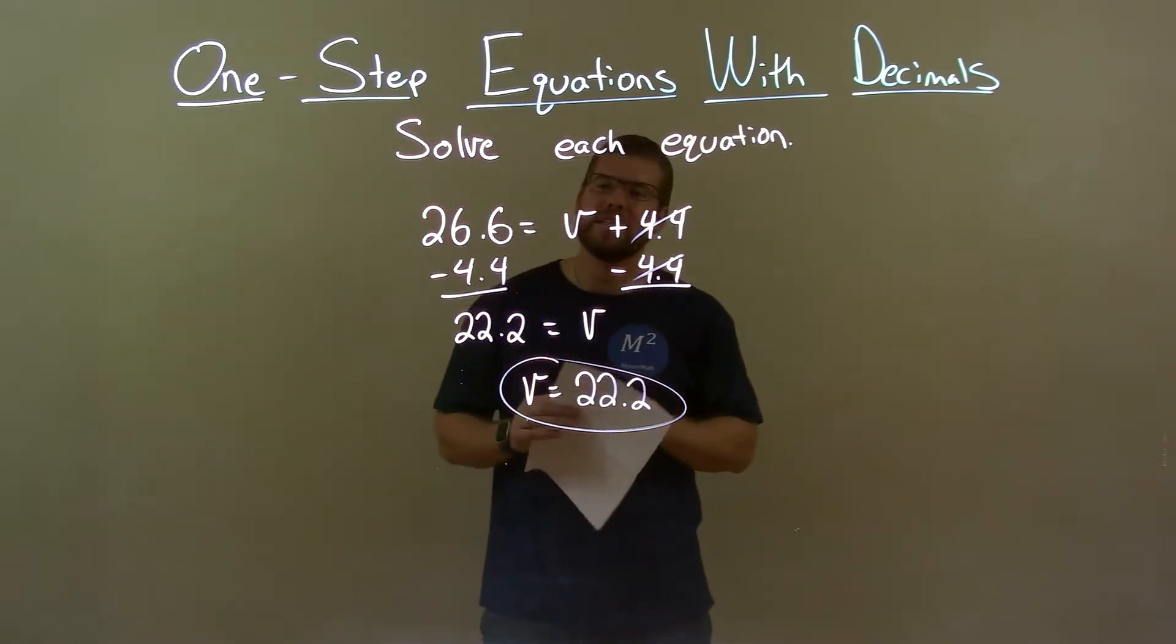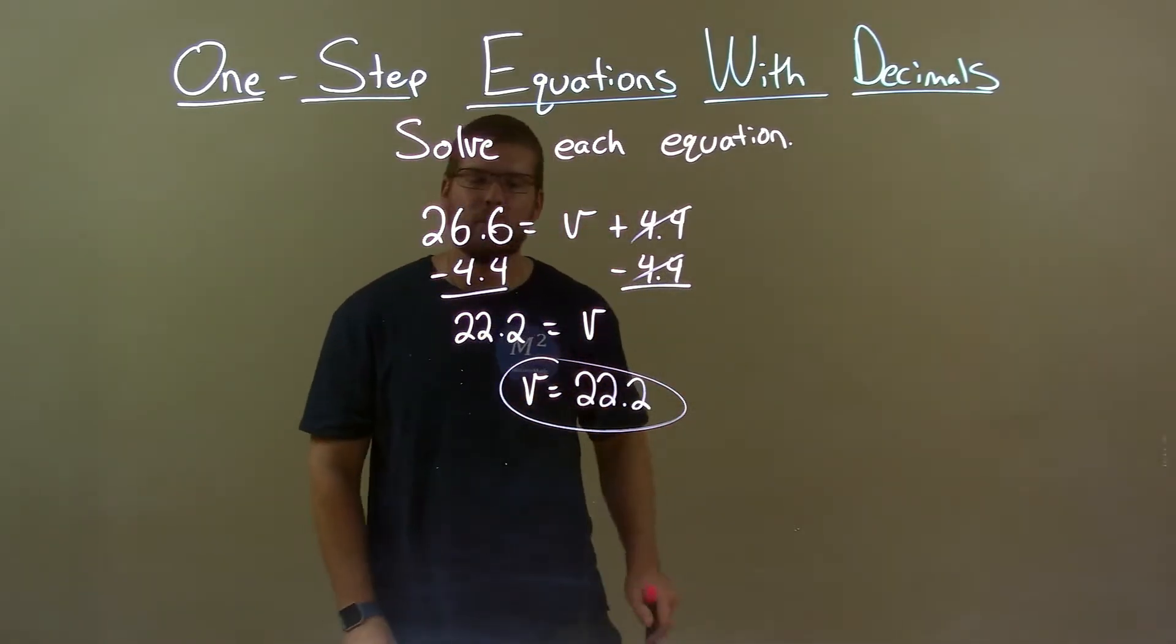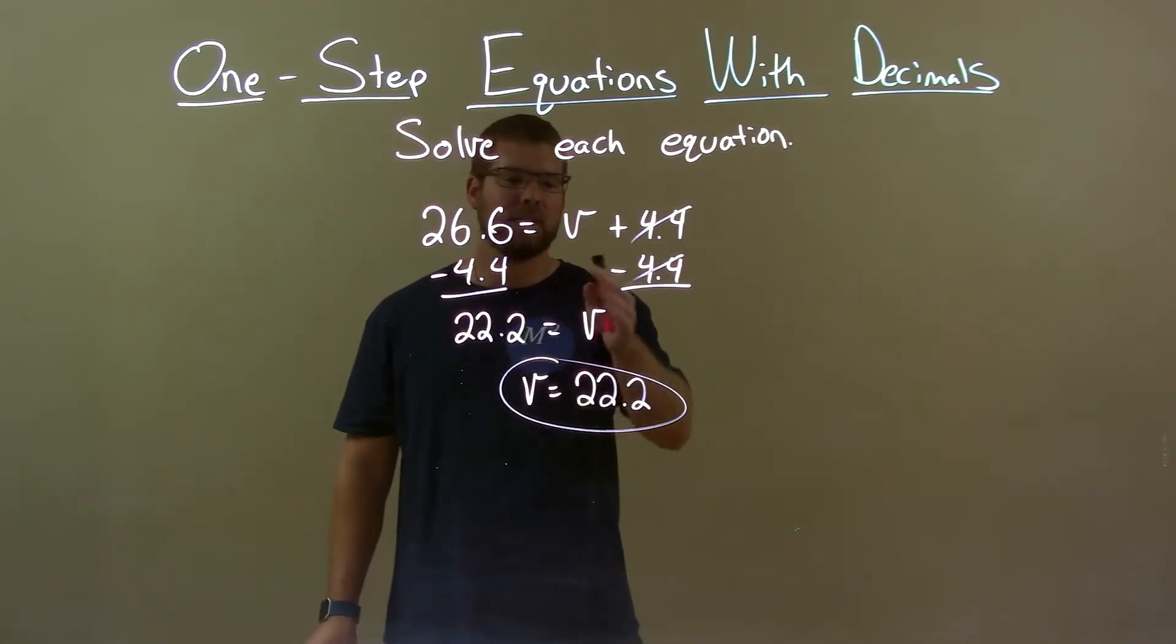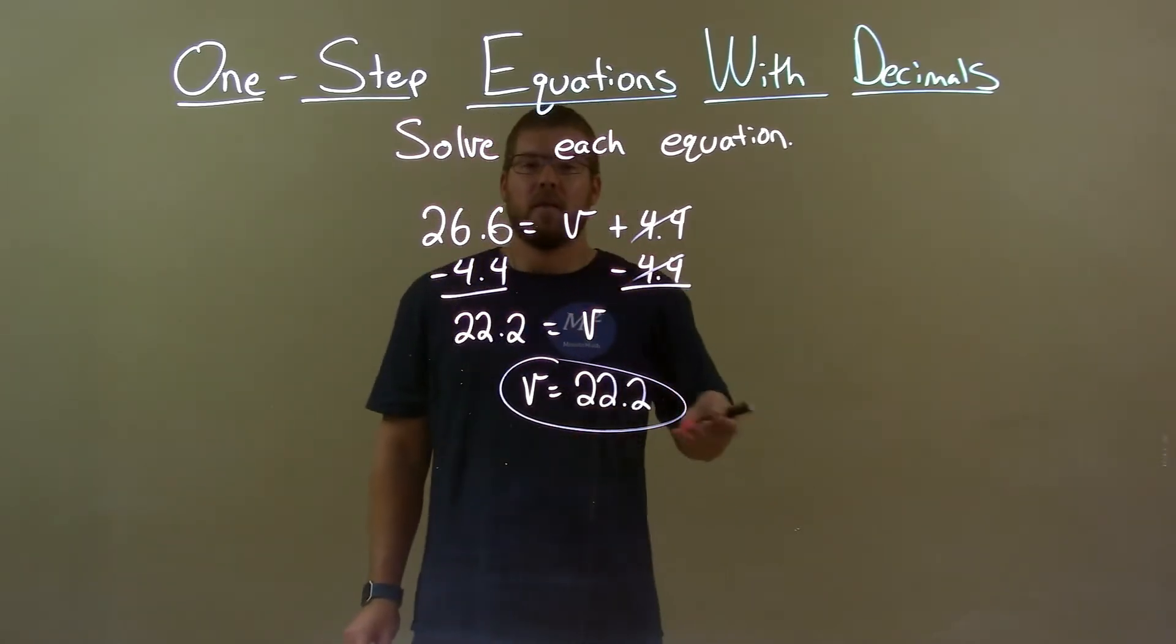Quick recap, we're given 26.6 equals V plus 4.4, and we've got to solve for V. Let's subtract 4.4 from both sides, giving me V by itself on the right. On the left, our final answer, 22.2.